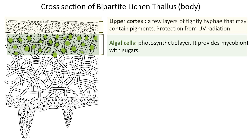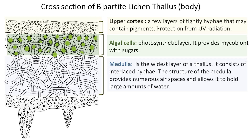Algal cells are tightly enveloped by hyphae from the medulla, the next layer below the algal cells. The medulla is the widest layer of the thallus. It has a cottony appearance and consists of interlaced hyphae. The loosely structured nature of the medulla provides numerous air spaces and allows it to hold a large amount of water.